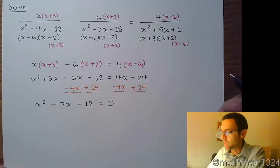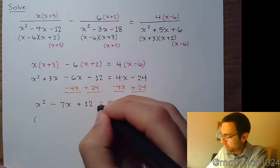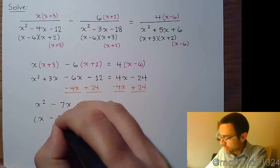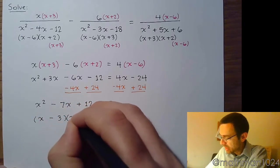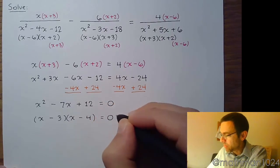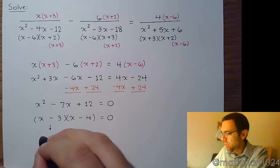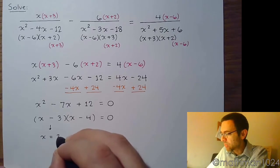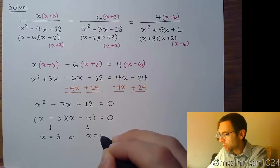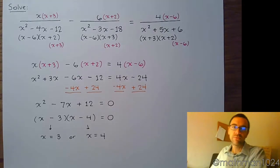This is a really nice one because it factors. Find factors of 12 that add to 7, so we use x minus 3 and x minus 4. You get x is equal to positive 3 or x is equal to positive 4.